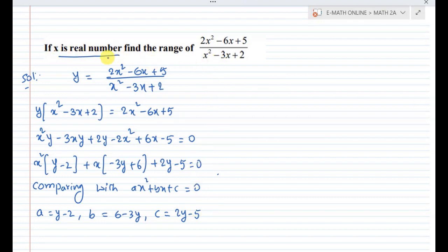x is a real number. Since x is a real number, x belongs to R, and the discriminant must be greater than or equal to 0 for real numbers. So discriminant b square minus 4ac greater than or equal to 0.